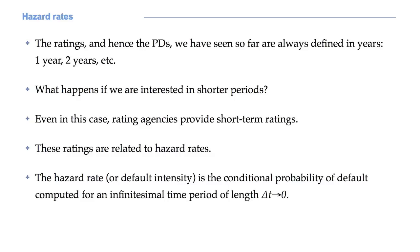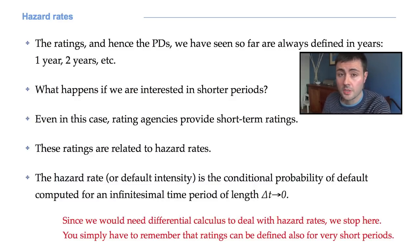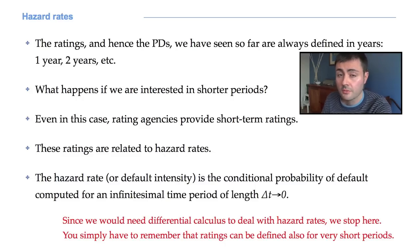The ratings, and hence the PDs we have seen so far, are always defined in years: one year, two years, and so on. What happens if we are interested in shorter periods? In this case, rating agencies provide short-term ratings. These ratings are related to hazard rates. The hazard rate is the conditional probability of default computed for an infinitesimal time period of length delta-t tending to zero. Since we would need differential calculus to deal with hazard rates, we stop here. You simply have to remember that ratings can be defined even for shorter periods.